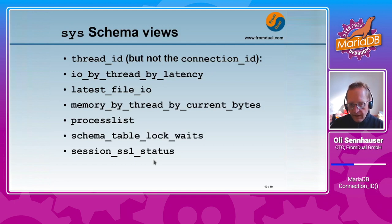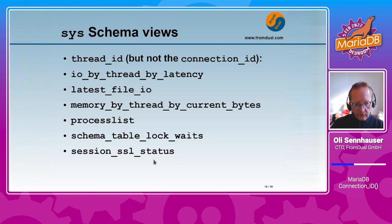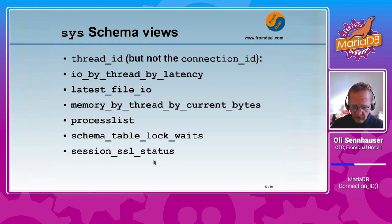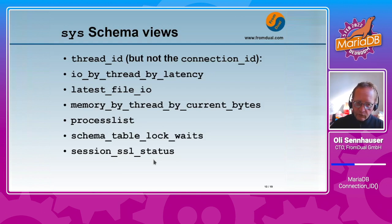Related to the performance schema there are the sys schema views. Also in the sys schema we have the thread ID in many different places, but I've never found the connection ID there. So we need again to do the conversion from the connection ID to the thread ID to view the information in the sys schema.